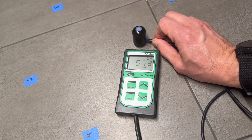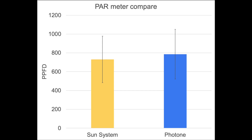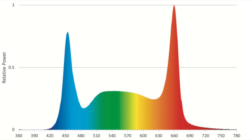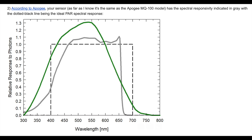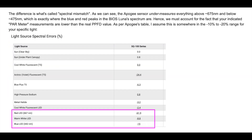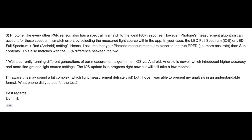Across the board, the Photone light meter read higher than the SunSystem PAR meter. I reached out and shared my results with Dominic at LightRay, the makers of the app and diffuser, and he had some interesting feedback. He looked at the spectrum of the BIOS light — which is very similar to other major LED companies, with large peaks in both the blue and red — and shared that my Apogee sensor may be under-measuring everything above 670 nanometers and below 475 nanometers due to a spectral mismatch. It's quite challenging for a meter to measure accurately across 400 to 700 nanometers, which is why we see a 10–20% accuracy range on the Apogee sensor. Photone's measurement algorithm can correct for these mismatch errors, leading to a more accurate representation, according to Dominic.